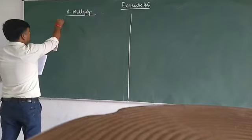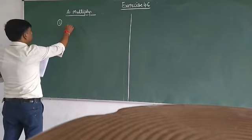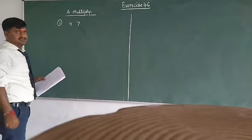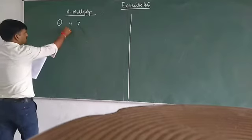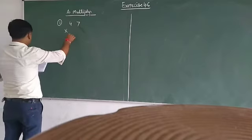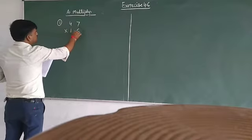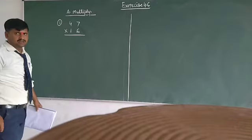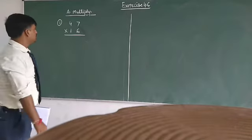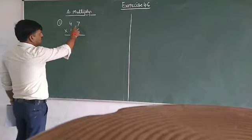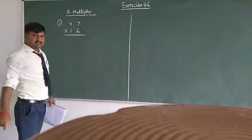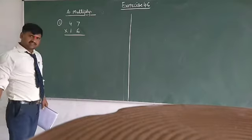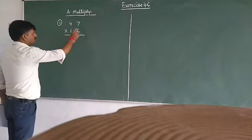Your first question is: 47 multiplied by 16. This is our question. 47 multiply 16. First of all, I multiply by 6 in 47.